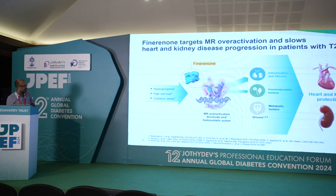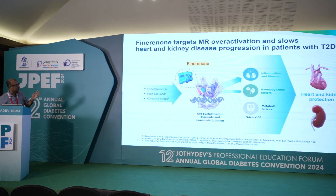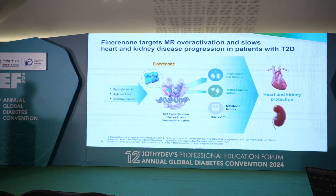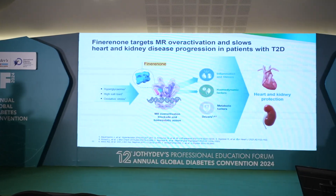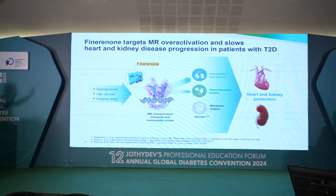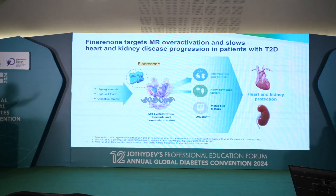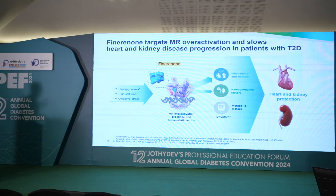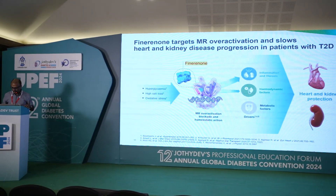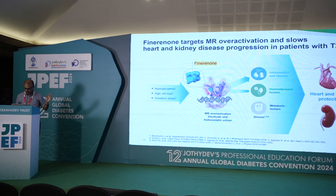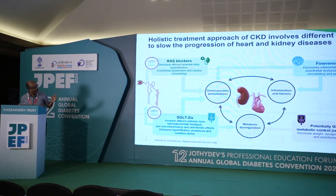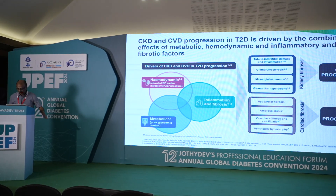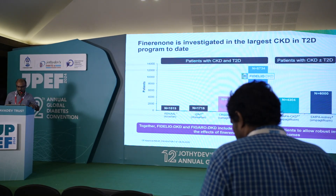Finerenone is similar to aldosterone or eplerenone, but it is a non-steroidal molecule. It acts on the mineralocorticoid receptor and addresses both inflammation and fibrosis, as well as hemodynamic factors — since blocking mineralocorticoid receptors reduces vasoconstriction and promotes vasodilation. Because inflammation and fibrosis occur in both the kidneys and the heart, finerenone provides protection in both organs.